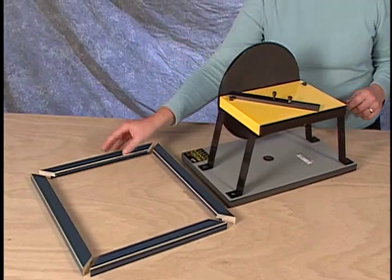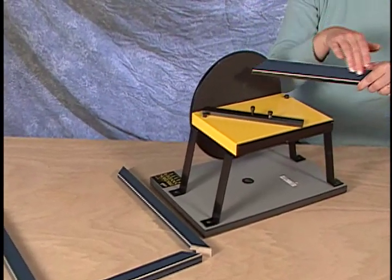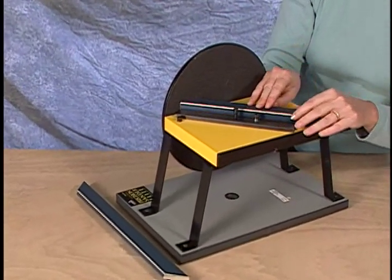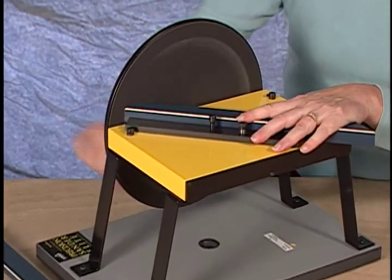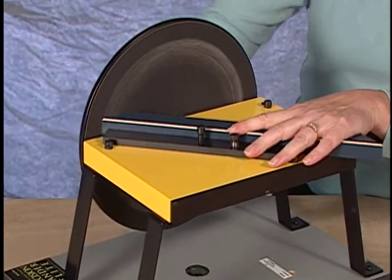To sand the mitered cuts on the ends of molding, insert the piece of molding into the sander with the top side up. To prevent any splintering, always see that you are rotating the wheel into the face of the molding.